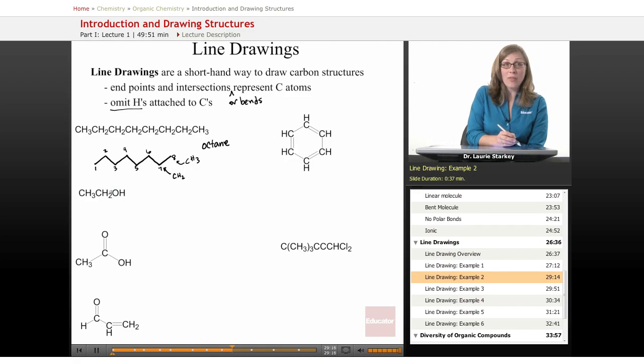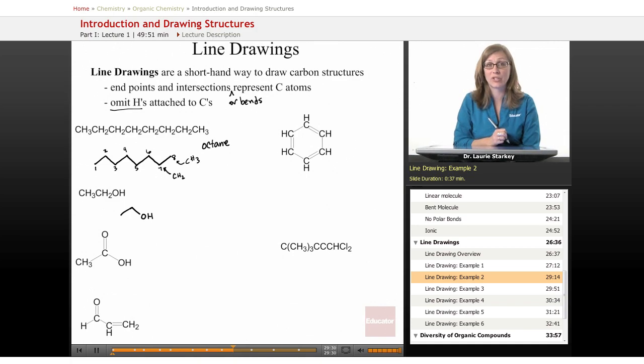Now, what do we do if we have an atom other than carbon? Well, we just draw that atom. So we have a two carbon chain, one, two. And then we have an oxygen attached to that. Now, this hydrogen we have to include because we only omit the hydrogens attached to carbon. So all other hydrogens are shown. So this represents this structure.